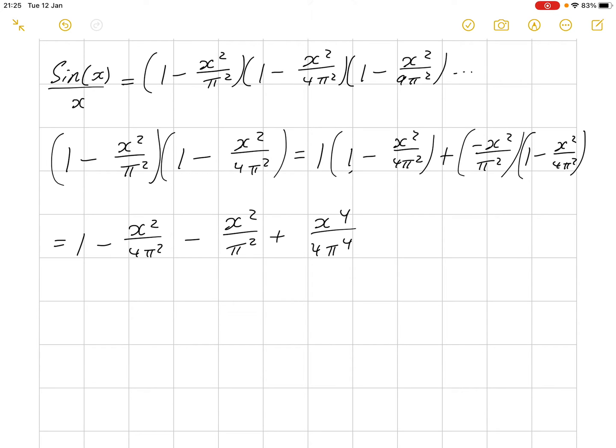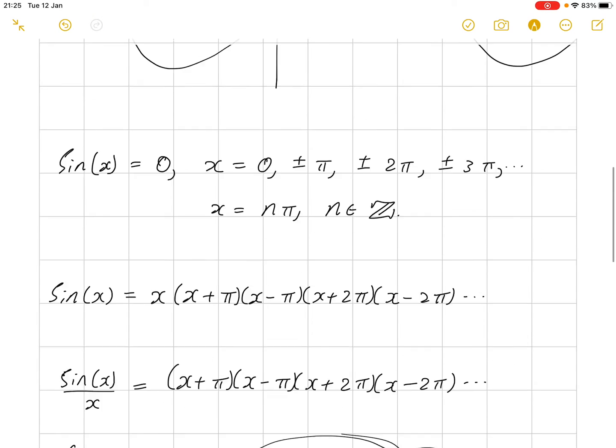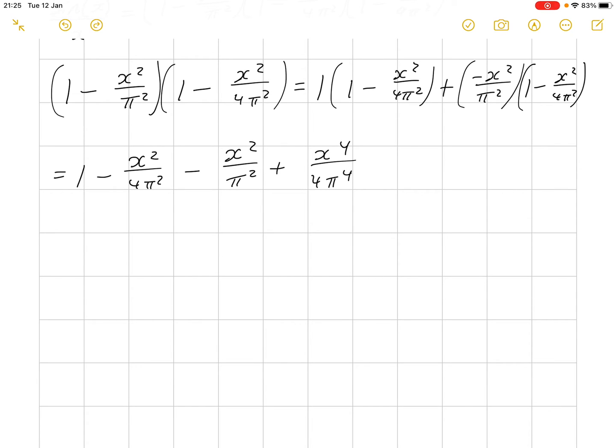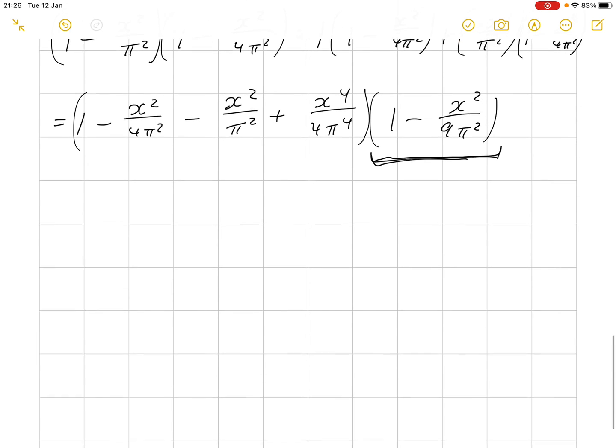Now, if you notice, when we have 1 times something, we preserve everything that's inside our bracket. After all, 1 is the multiplicative identity. So, why am I mentioning this? Well, because we will always have 1 times the next step. That would come would be 1 minus x squared over 9 pi squared. So, what we will have is we will, in essence, conserve this 1 minus x squared over 9 pi squared.